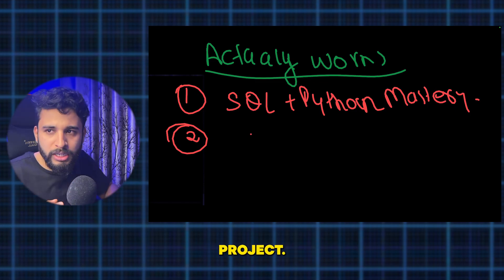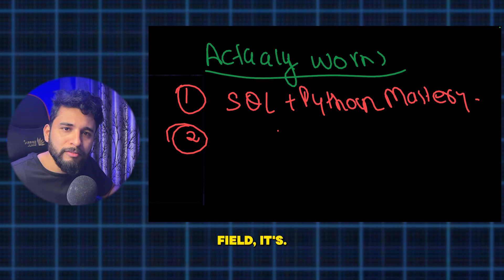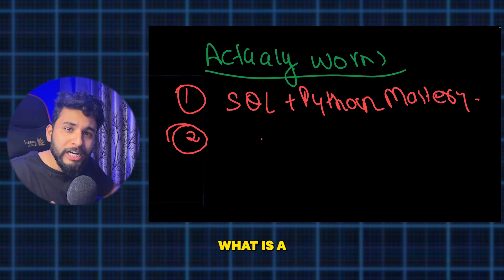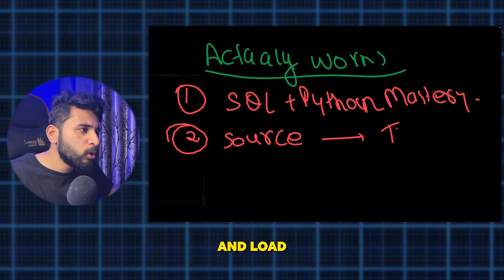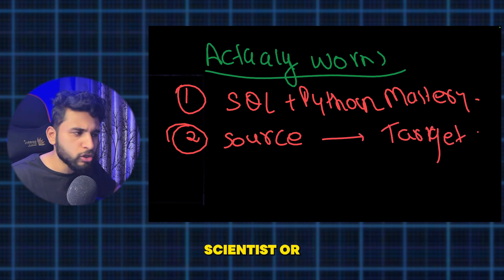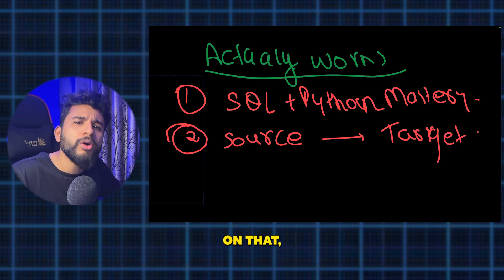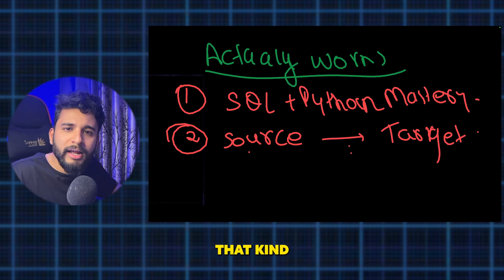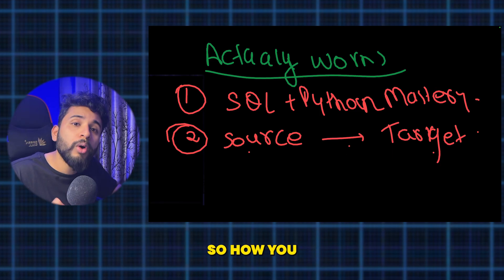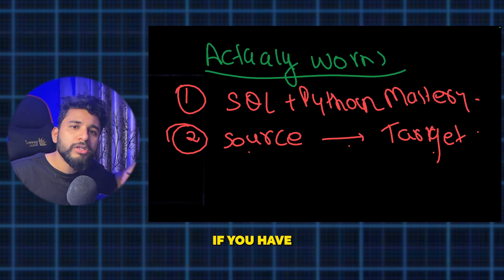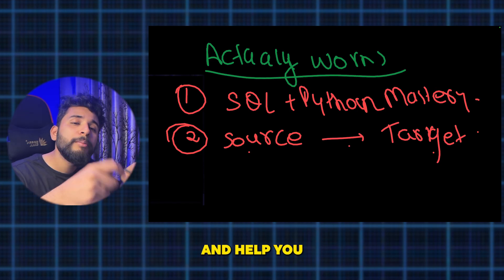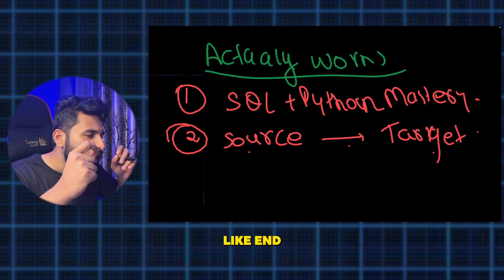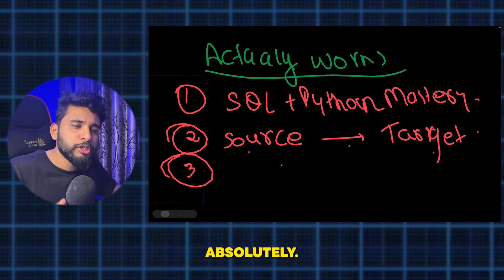The second thing that works is building real data engineering projects. The major work of a data engineer is to build pipelines — fetch data from a source, process it, and load it into a target so that data scientists, ML engineers, data analysts, or business analysts can query it. You need to build ETL pipelines. Make end-to-end projects using different cloud platforms; it will help you grow significantly.